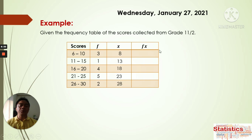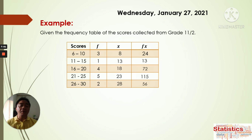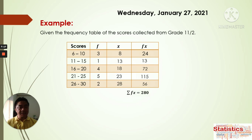Next, we find fx — we multiply f times x. So 3 times 8 is 24. 1 times 13 is 13. 4 times 18 is 72. 5 times 23 is 115. And 2 times 28 is 56. Now we get the sum of fx, sigma fx. Adding all of these: 24 plus 13 plus 72 plus 115 plus 56 equals 280. We also get the sum of all frequencies, which is 15. Our data are complete.